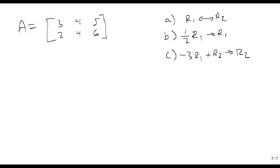So now we're going to show you how we can use each of the three row operators, and we're going to start with this matrix A. So A is defined as the matrix with a row of 3, 4, 5, and a row of 2, 4, 6.